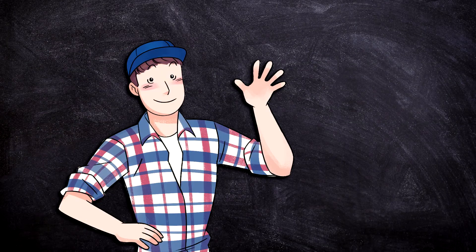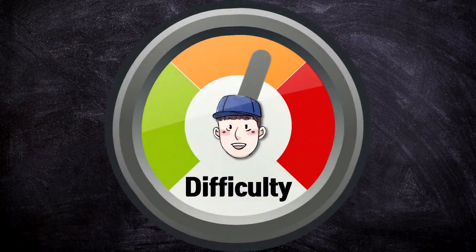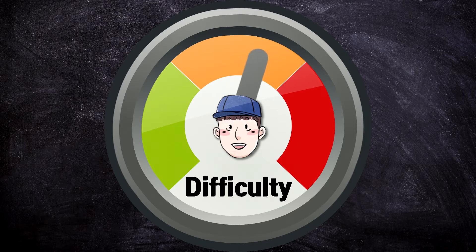Hi! Today we're going to learn how you can express that you're worried about something. The grammar form we'll be using today is for intermediate level learners, so make sure you're ready before starting. Let's get started.